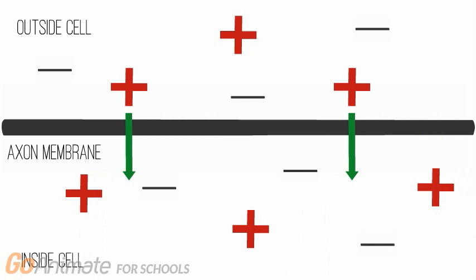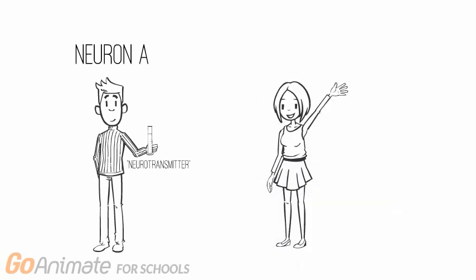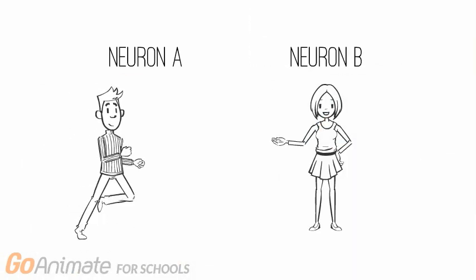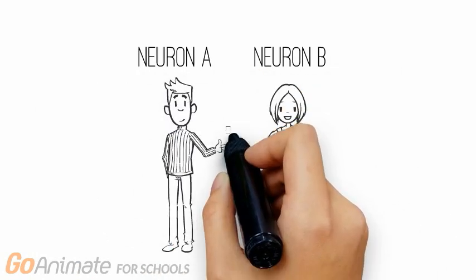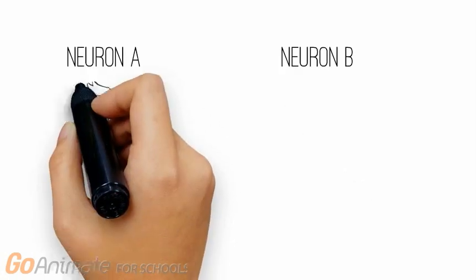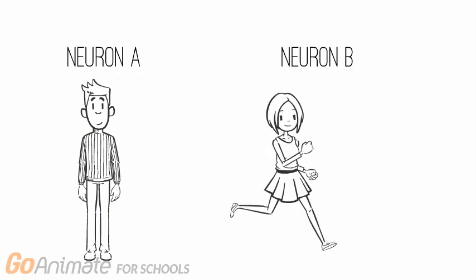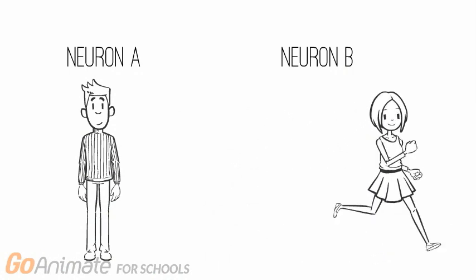To illustrate how a signal is transmitted from one neuron to the next, imagine two runners in a relay. One runner, whom we call neuron A, is carrying the baton, which in this case is a chemical signal also known as a neurotransmitter. The second runner standing and waiting for the baton is neuron B. When the signal approaches the terminal boutens of neuron A, it is released in a similar fashion to how the first runner releases the baton. As soon as the baton or neurotransmitter binds to neuron B, neuron B can start running. This is essentially how signals are chemically transmitted across neurons.